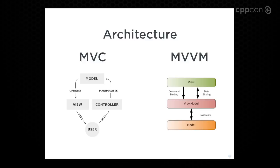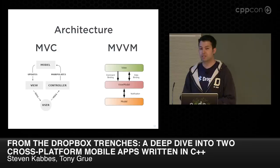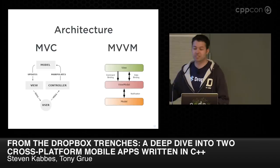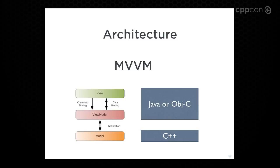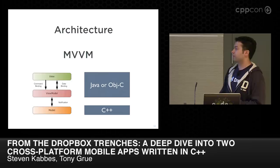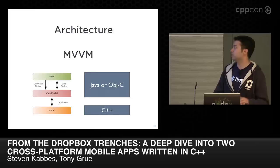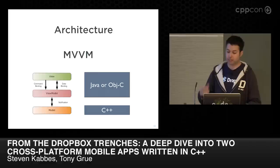So the first question we had to answer when building these apps is: what is the architecture going to be? How many of you are familiar with MVVM? Almost everyone — that's awesome. I'm really glad MVVM has gained so much adoption in the last couple of years. The nice thing about it is that there are some really clean layers. We were pretty confident that we can build our entire model layer, the vast majority of our business logic, in C++. And then we would build the view model and the view in Objective-C or Java on each platform.